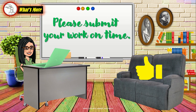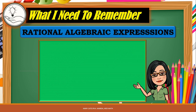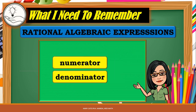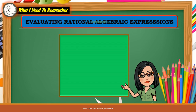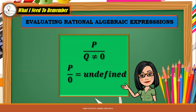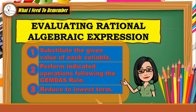Here is what you need to remember. In rational algebraic expressions, the numerator and the denominator are denoted by P and Q variables. When evaluating rational algebraic expressions, make sure that Q is not equal to 0, because it will become undefined. Fractions where denominators are 0 are undefined. The steps in evaluating rational algebraic expressions: Number 1, substitute the given value of each variable. Number 2, perform indicated operations following the GEMDAS rule. And Number 3, reduce to lowest term.